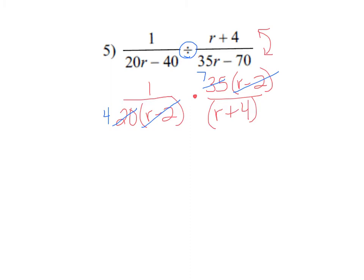After I've done all of that, it looks like on the top all I have left is a 1 times a 7. On the bottom I have that 4 and an r plus 4. Doesn't look like I missed out on anything reducing, so I'm going to call that good.